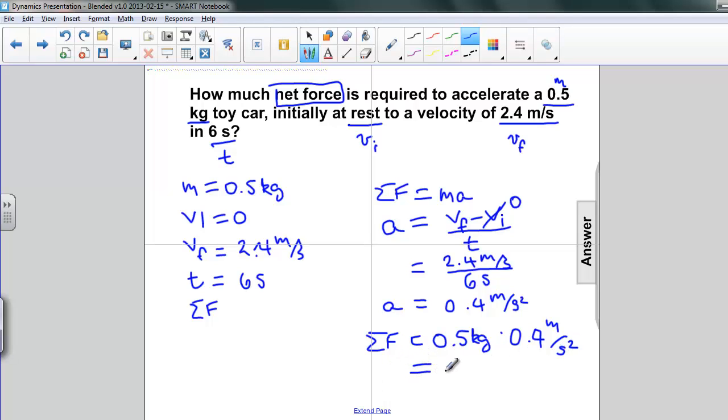Multiplying these through, we get that the net force is equal to 0.2, and it's kilogram meters per second squared, and that, as we know, is newtons. Net force, 0.2 newtons.